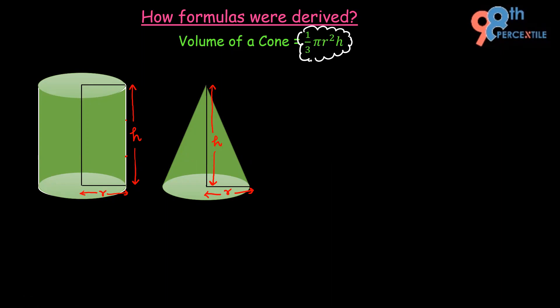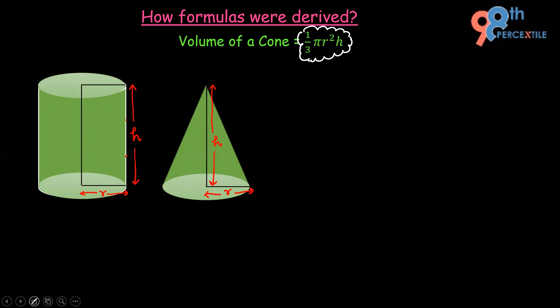The proof is the easiest proof — you can literally do it at home. All you need is a hollow cylindrical object and a hollow conical object. You can take paper and create both, but make sure that the radius and height of the cylindrical and conical objects are the same.